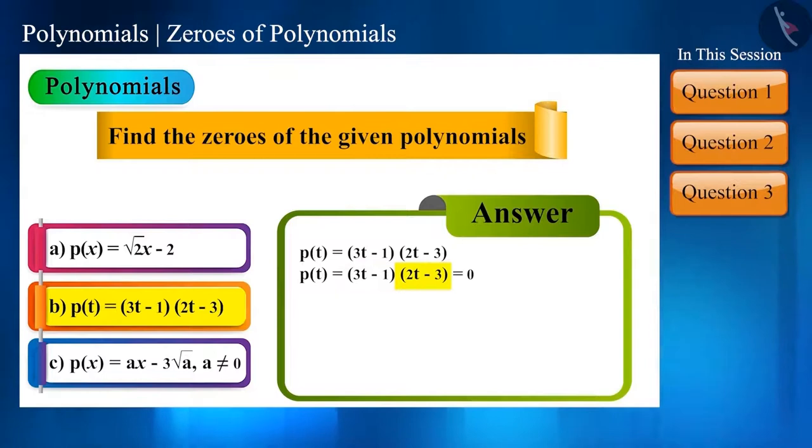That means 3t minus 1 is equal to 0, or 2t minus 3 is equal to 0. That is, t is either 1 by 3 or 3 by 2.